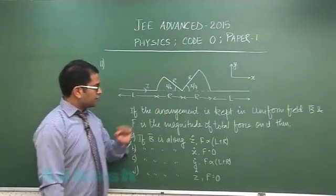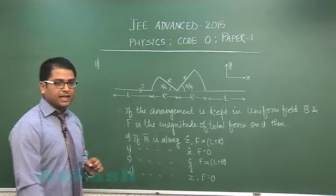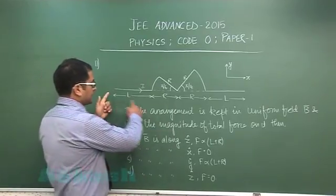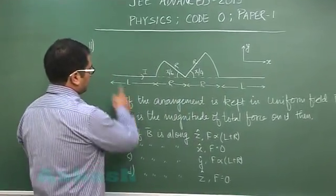Question number 11 is from magnetism where we have to deal with calculation of magnetic force. This is a current carrying conductor, a piece of current carrying conductor that's given.